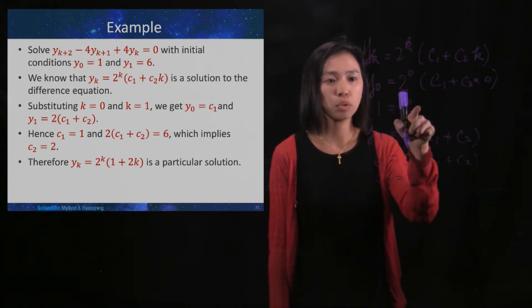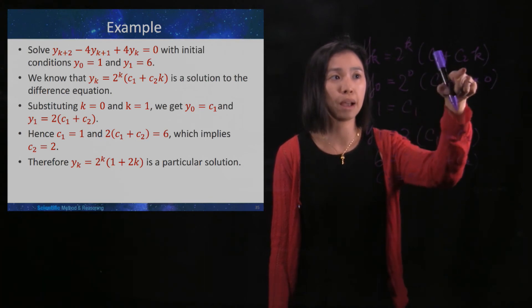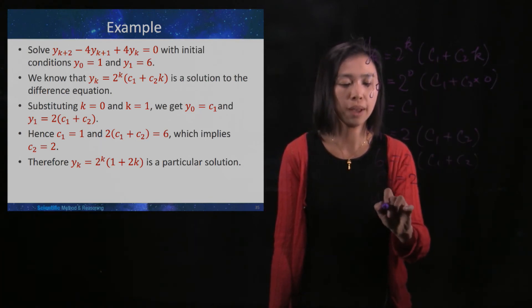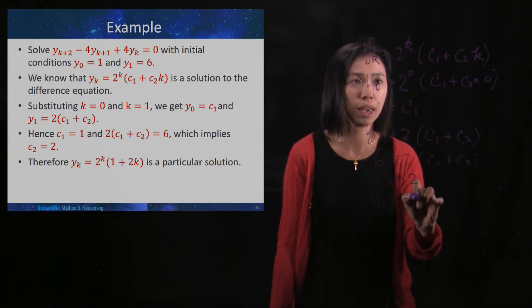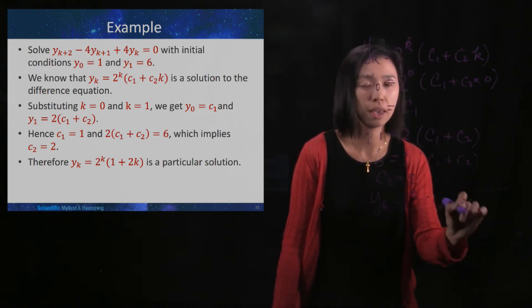And we will substitute your c_1 and c_2 back to this one. You will have your y_k to be 2^k times (1 + 2k).